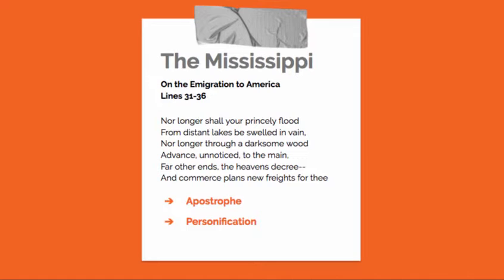In this stanza, we get the idea that the waters of the Mississippi will no longer be wasted. They will no longer just be dark woods; they will be focuses of economic productivity. You get that — 'far other ends the heaven's decree, and commerce plans new freights for thee.' This is a really proleptic envisioning of what's going to happen on the Mississippi, which is going to become this commercial corridor for America.